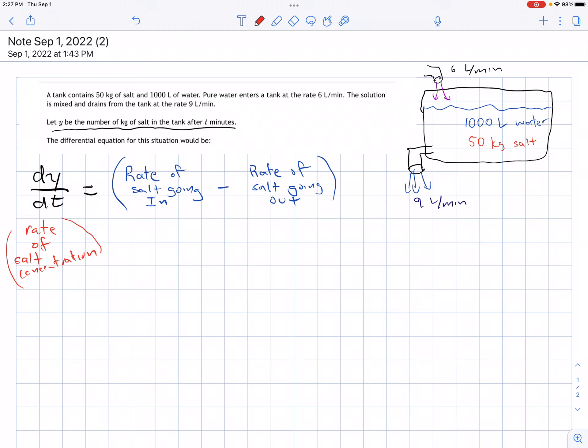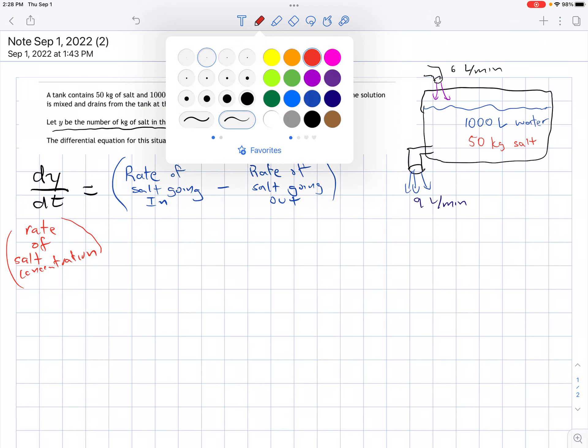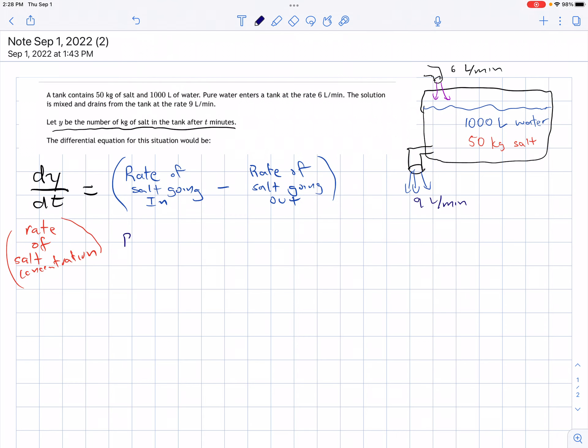We know there's a certain amount of salt, y, going out of the tank in the 9 liters per minute. To set this up, I'll start by looking at the rate in, which we already know. We have 6 liters per minute of water going in with 0 kilograms of salt per liter of water. This gives us that the rate of salt going in is 0 kilograms per minute.